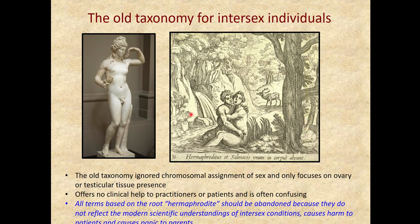There was an old taxonomy for intersex individuals that focused on the presence of either ovarian tissue or testicular tissue. It was very confusing and derogatory — calling individuals hermaphrodites or pseudo-hermaphrodites according to whether they had one type of gonadal tissue or two. It was very difficult to have individualized understanding of every person's internal and external genitalia and that person's feeling of fitting into a particular sex category. It provided no clinical help and was derogatory, so this taxonomy has been abandoned.